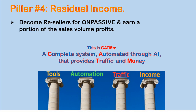So CATMO — C-A-T-M-O — is a complete system automated through AI that provides traffic and money. When we refer to Baby CATMO, we're referring to the launch of the co-founders site and everything that entails, which is also giving us a chain reaction of events that are going to lead us to a global event in a few weeks. Now that we understand a bit more about Baby CATMO, let's jump into 10 great reasons why we need to be in this business.